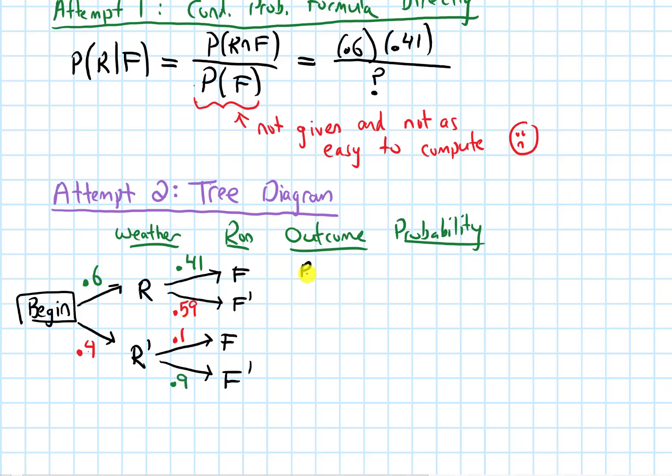Let's list these outcomes. We have RF, R F complement, R complement F, and then R complement F complement. Multiplying the probabilities, we get 0.6 times 0.41, 0.6 times 0.59, 0.4 times 0.1, and then 0.4 times 0.9. The first one is 0.246, and then we get 0.354, and then 0.04, and then finally 0.36.